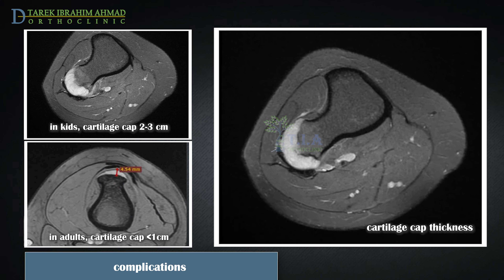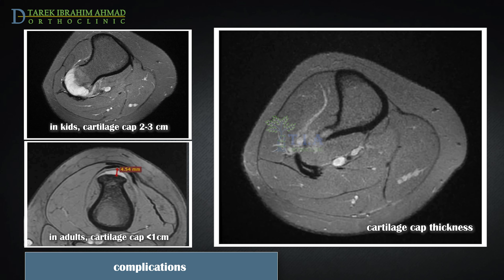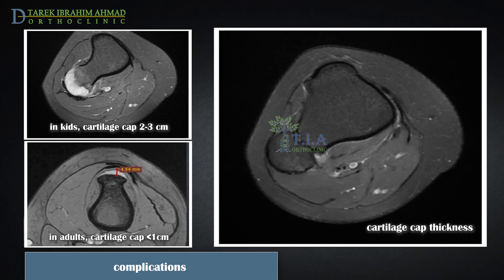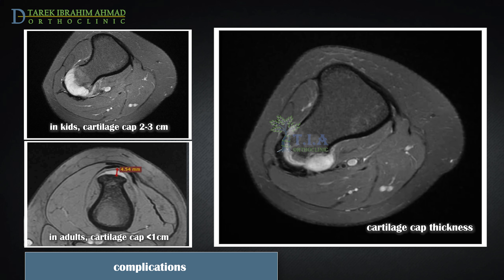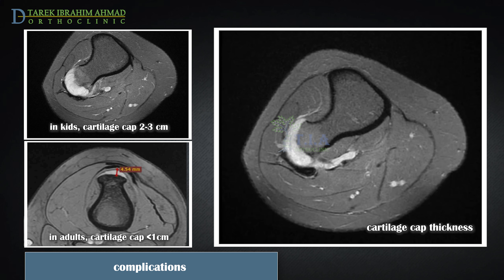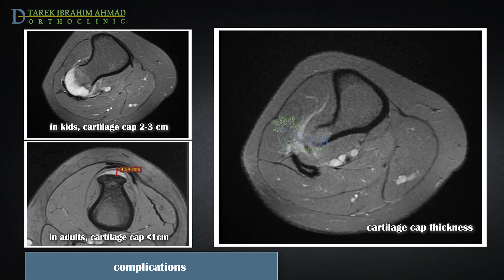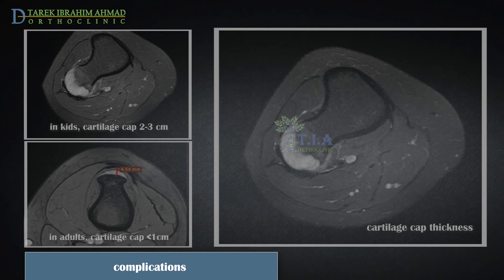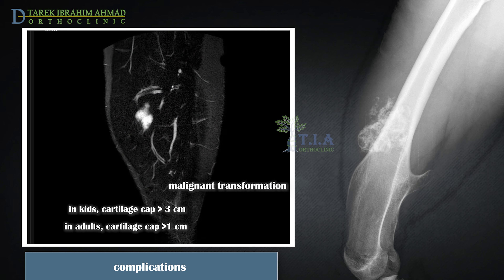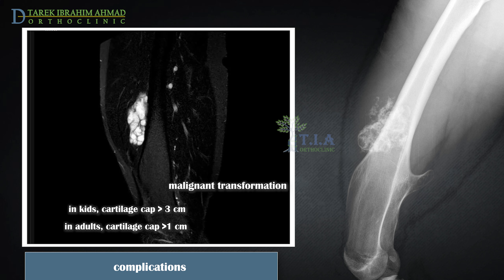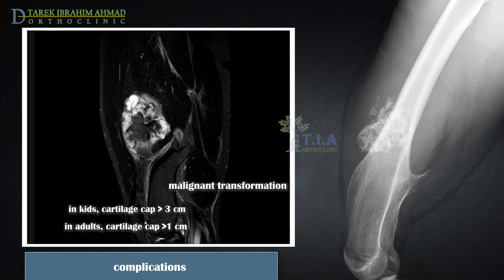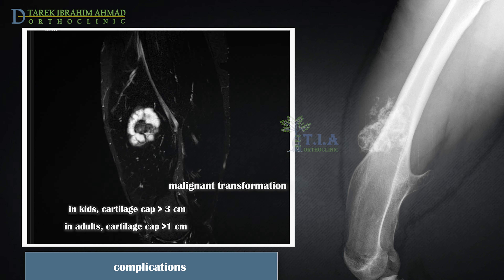The most reliable imaging finding is the thickness of the cartilage cap. The cartilage cap is thick in the child, may be greater than two centimeters, narrows during adolescence, and is generally less than one centimeter in the adult. A cartilage cap thickness greater than three centimeters in children or two centimeters in adults is a sign of malignant transformation.